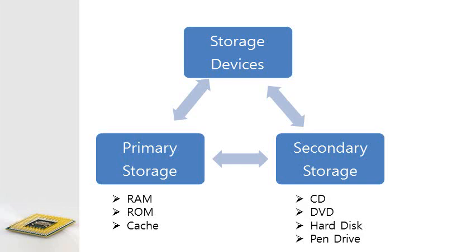There are two types of storage devices: primary storage devices and secondary storage devices. Primary storage devices are smaller in size. These are designed to hold data temporarily and are internal to the computer. They have the fastest data access speed and include RAM, ROM, and cache memory.